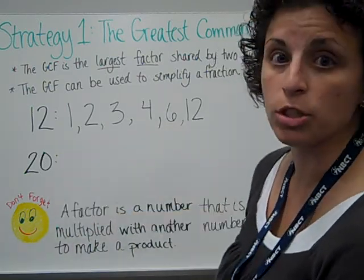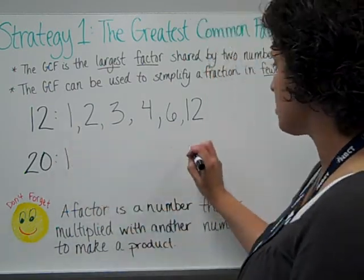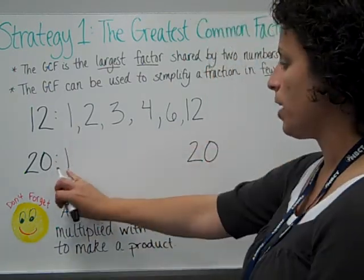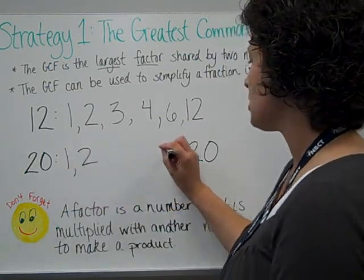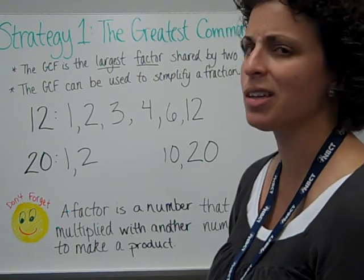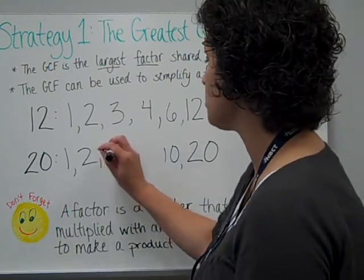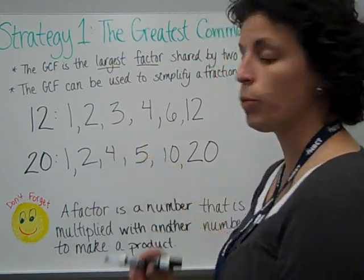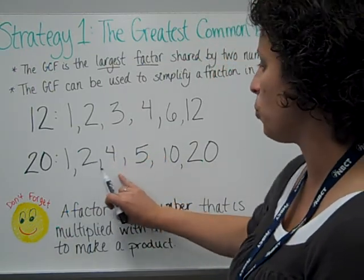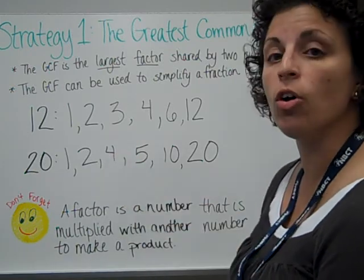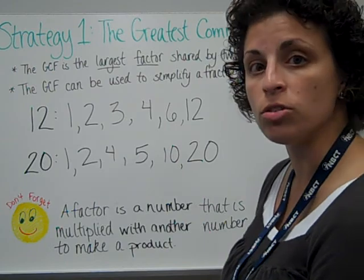Now I need to list my factors for 20. Again, I'm going to start with 1 times 20. And yes, skipping space. 1 times 20, how about 2? 2 times 10, 3 times nothing is 20, so that won't work. 4 times 5 would make 20. And again, that pair that went together to make 20, 4 times 5, there's no other whole number in between. So this is a complete list of factors of 20.